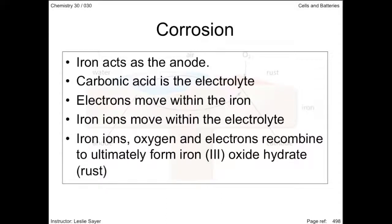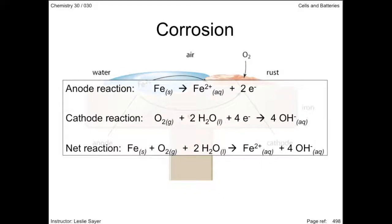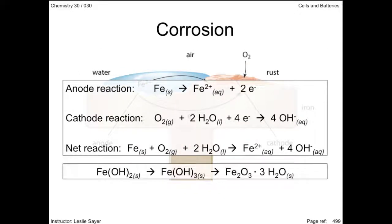The rusting process is actually a lot more complicated than shown here. Equations at the anode and the cathode can be written in a variety of ways, and the net reaction shown here has been simplified. The iron ions and hydroxide ions form solid iron 2 hydroxide, which in turn combines with more water and oxygen to form iron 3 hydroxide, which then breaks down to form iron 3 oxide trihydrate — rust.